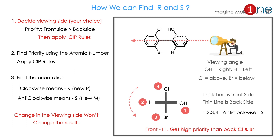How we can find R and S? First, you have to decide the viewing angle where the priority of the front side is greater than the back side. Then you have to apply the CIP rule. When finding priority by CIP rule, go with atomic number, then atomic mass. Then find the orientation — clockwise means R, anti-clockwise means S. The new name is P and M: P is plus, M is minus. Then an important thing: changing the viewing angle doesn't change the results. For example, right side is OH, left side is hydrogen, top is chlorine, bottom is bromine. The thicker side is OH and H, thin side is chlorine and bromine. By priority: OH is first, hydrogen is second, bromine is third, chlorine is fourth. If you look at the orientation, it will be anti-clockwise, so S. The front hydrogen gets higher priority than back-side chlorine and bromine. Master the viewing angle and orientation — that's how you find R and S.